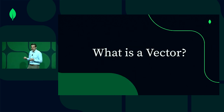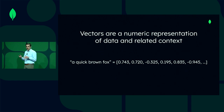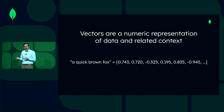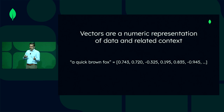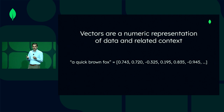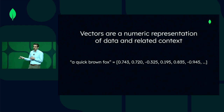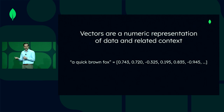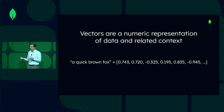So what is a vector? A vector is a numeric representation of data and related context. If you take a very simple example like 'a quick brown fox,' it would be an array of floats which represents both the data — so the words 'a quick brown fox' — but also the context: how 'a' relates to 'fox,' what does 'brown' mean, fox is not a dog, it's also not a cat. Things like this would be the associated context represented inside of this vector.